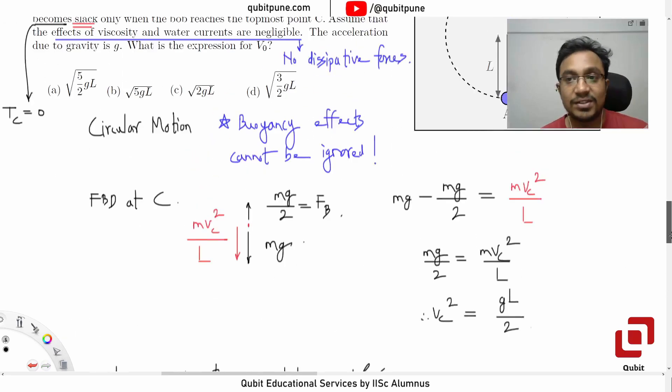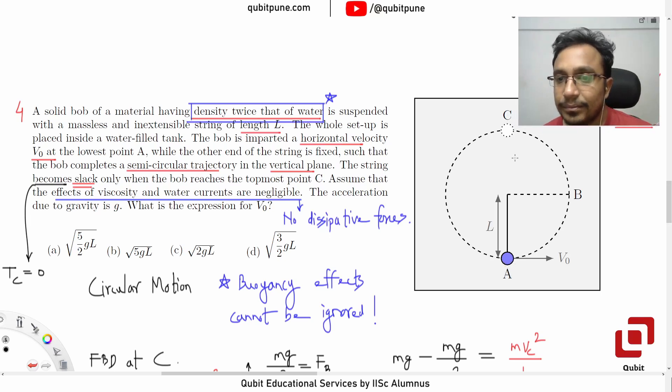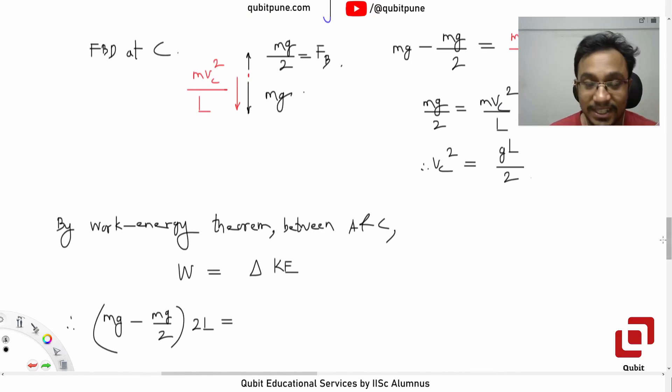Correct. So we can say (MG minus MG by two) into 2L. Why 2L? Because these forces have constant directions and magnitudes also, as long as it is in the water. This means path independent because it's conservative forces. So if you go in circular path or straight, work done is always the same. Work done in this case is not a path function. It is a state function in this case because all forces are constant.